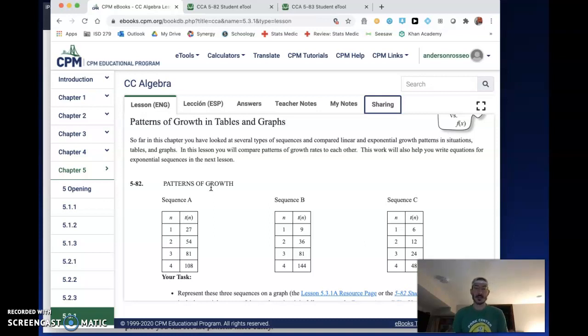It's probably going to be a good move to have this open because there's a couple e-tools provided from Desmos. These e-tools are going to be helpful in how we proceed and look at these sequences and patterns. So far in this chapter you've looked at several types of sequences and compared linear and exponential growth patterns. In this lesson, we're going to compare the patterns of growth rates to each other. This work will also help you write equations for exponential sequences in the next lesson.